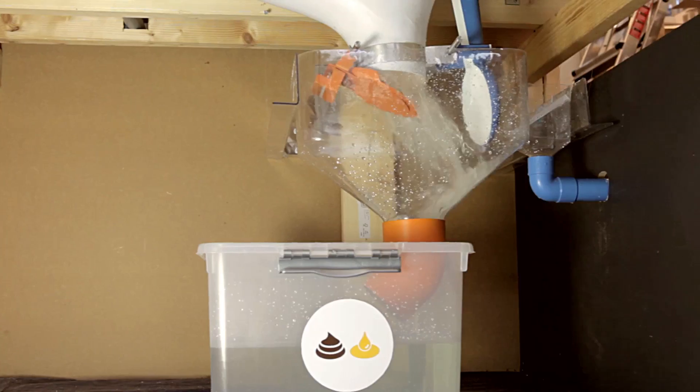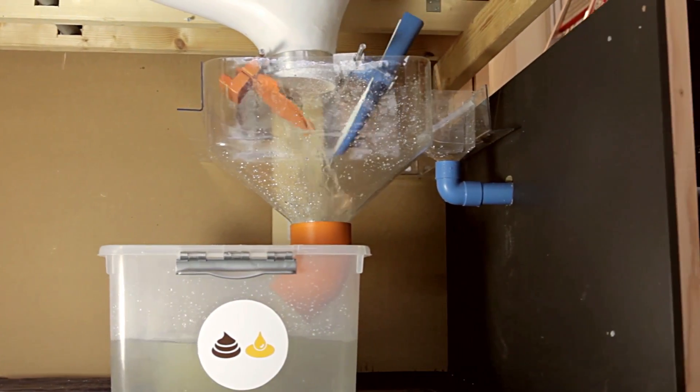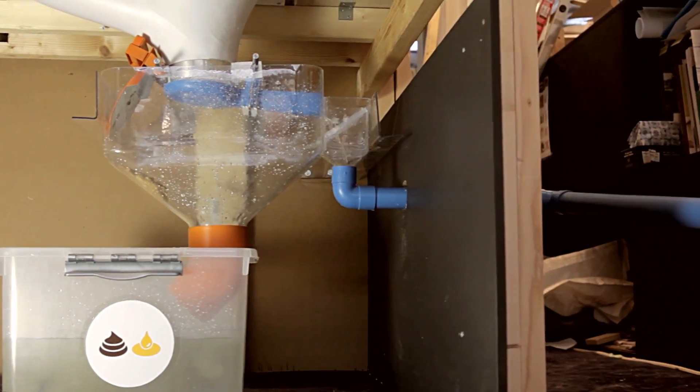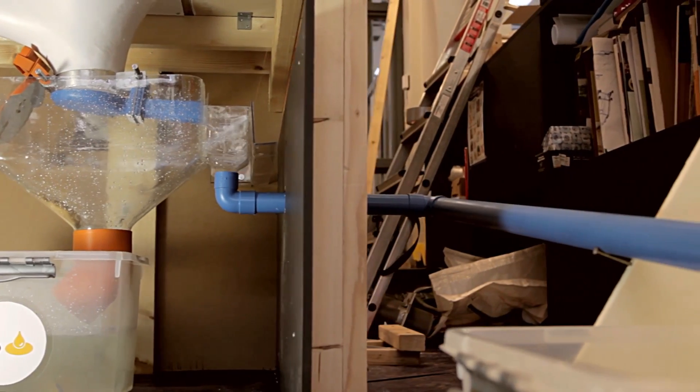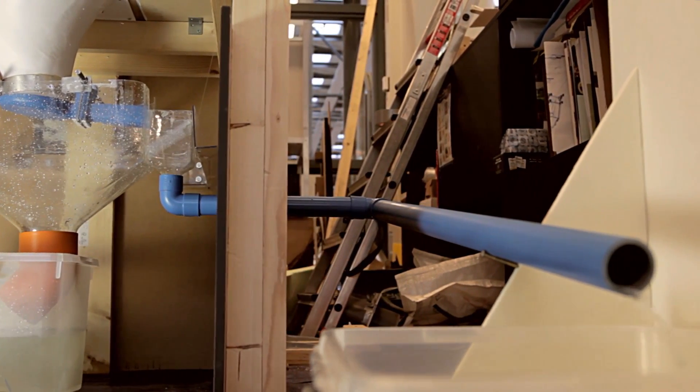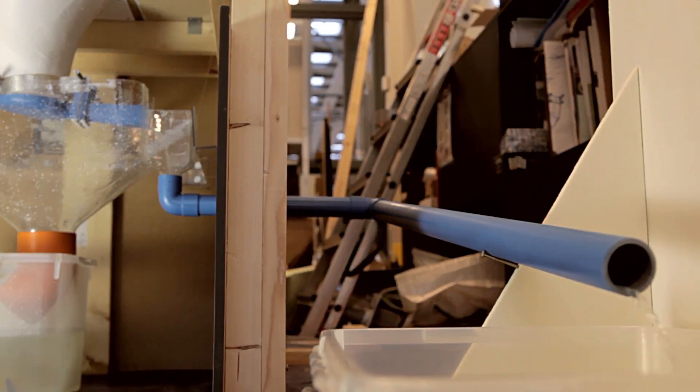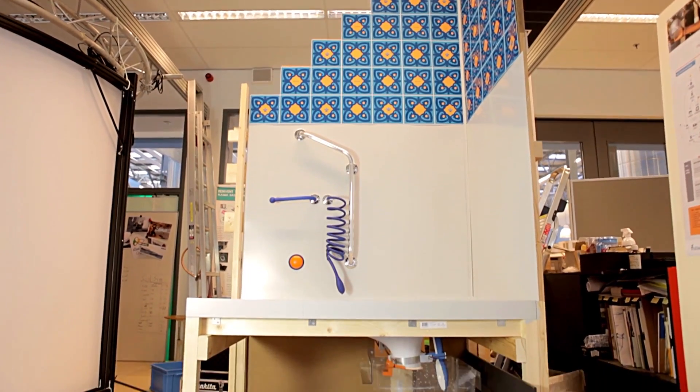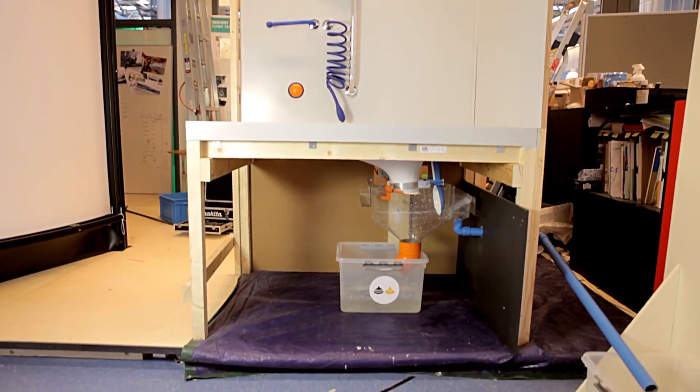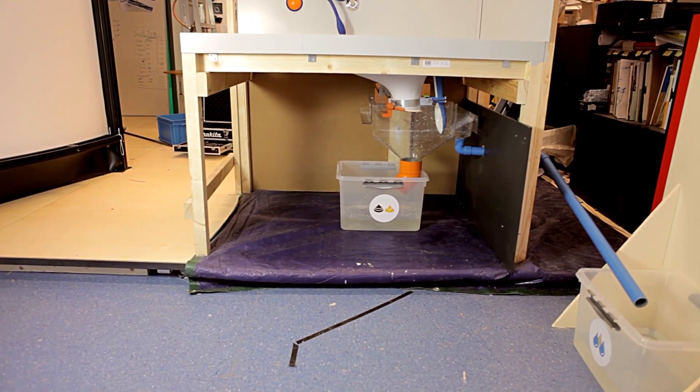The toilet itself diverts two streams. To one side it directs urine, feces, and flushing water. And to the other side it directs cleaning water and anal cleansing water. We do this so the feces can be transported to the processing plant where they will be treated. And the water we can recycle on site and reuse it then again to flush or to clean.